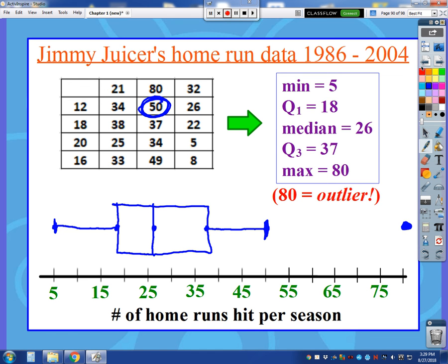One other slight thing that might come up: what if I had two values of 80? What if two years he hit 80 home runs? Then I would put two dots and kind of stack them on top of each other, so I'd know there were two outliers at 80.